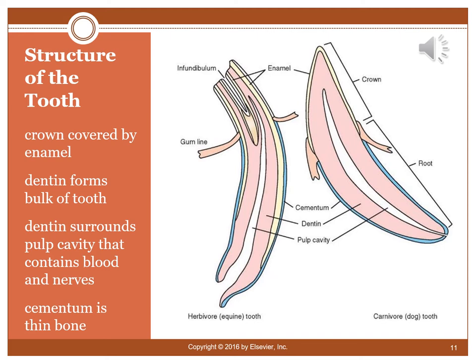From outside to inside, the tooth consists of enamel, then dentin, then the pulp cavity, which extends to the outer part of the tooth. Below the gum line, instead of enamel, there is cementum — a thin bone-like layer — followed by dentin, then the pulp cavity again. The infundibulum is a deep groove found only on equine teeth and is not present in carnivore or human teeth.